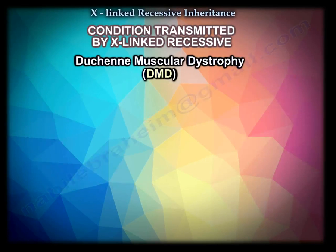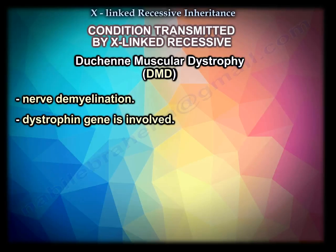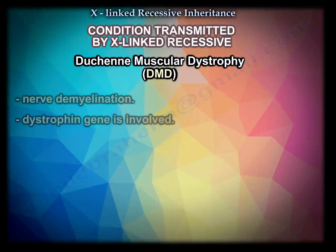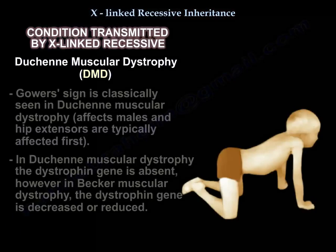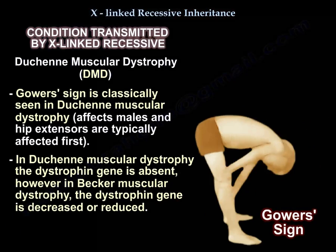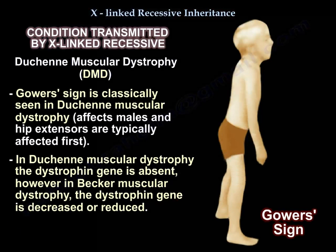Another condition is Duchenne muscular dystrophy, DMD. The dystrophin gene is involved. You see the Gower sign, and the hip extensors are usually affected first. It affects males; the dystrophin gene is absent. But in Becker's muscular dystrophy, the dystrophin gene is decreased or reduced.